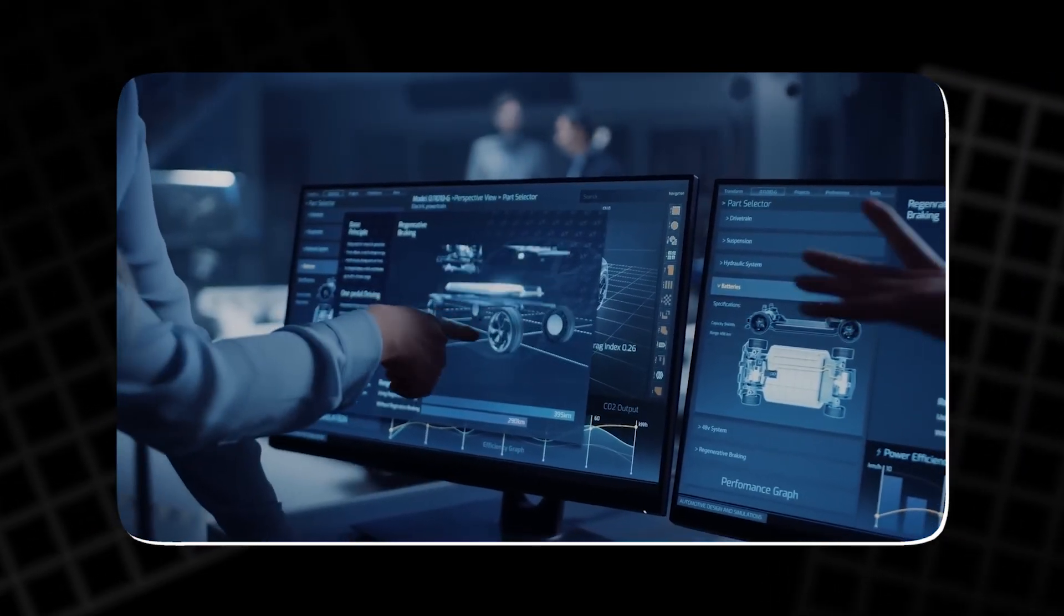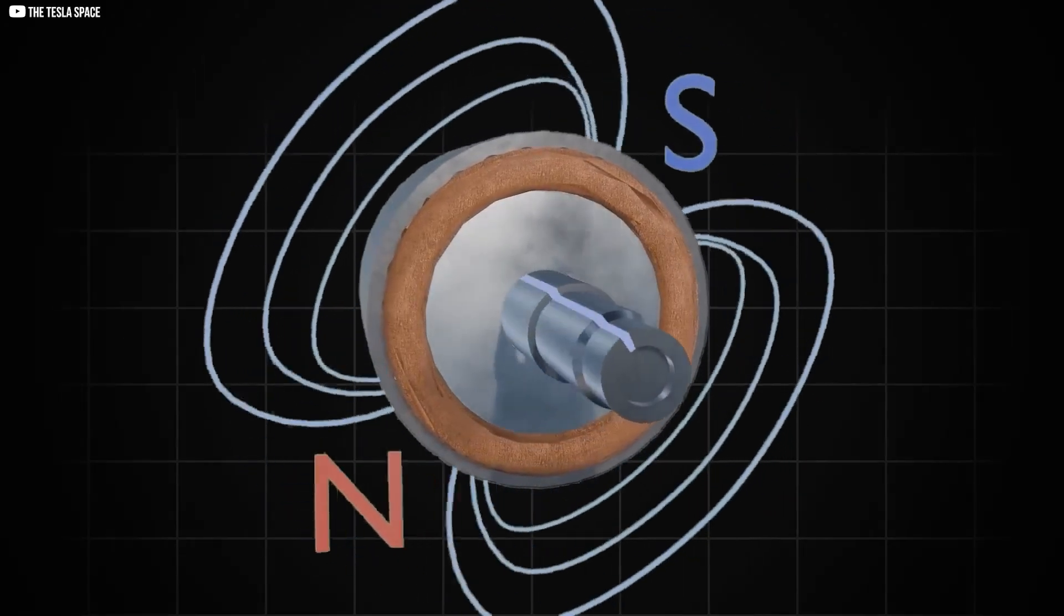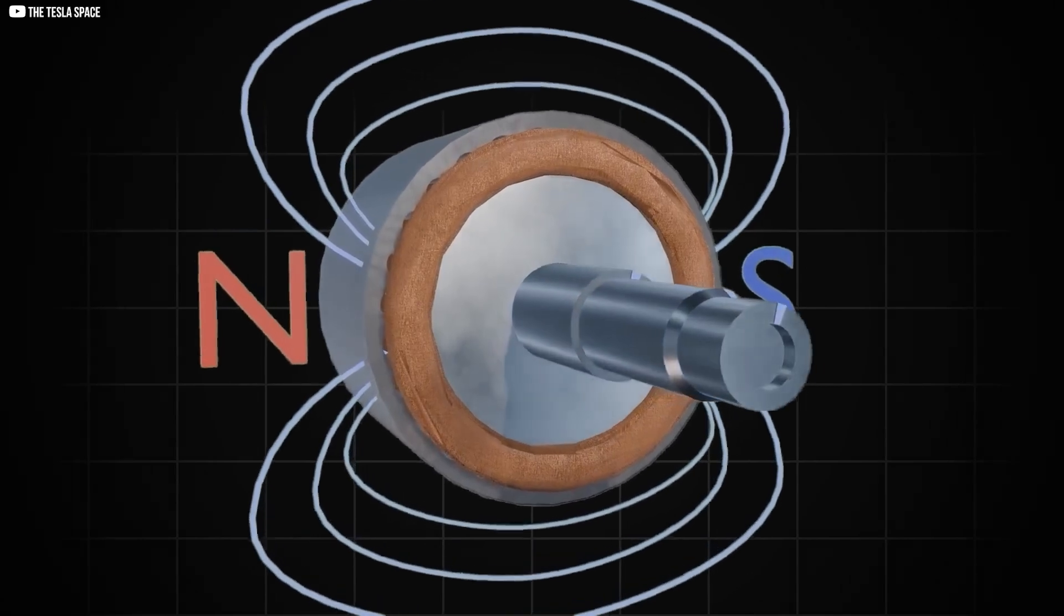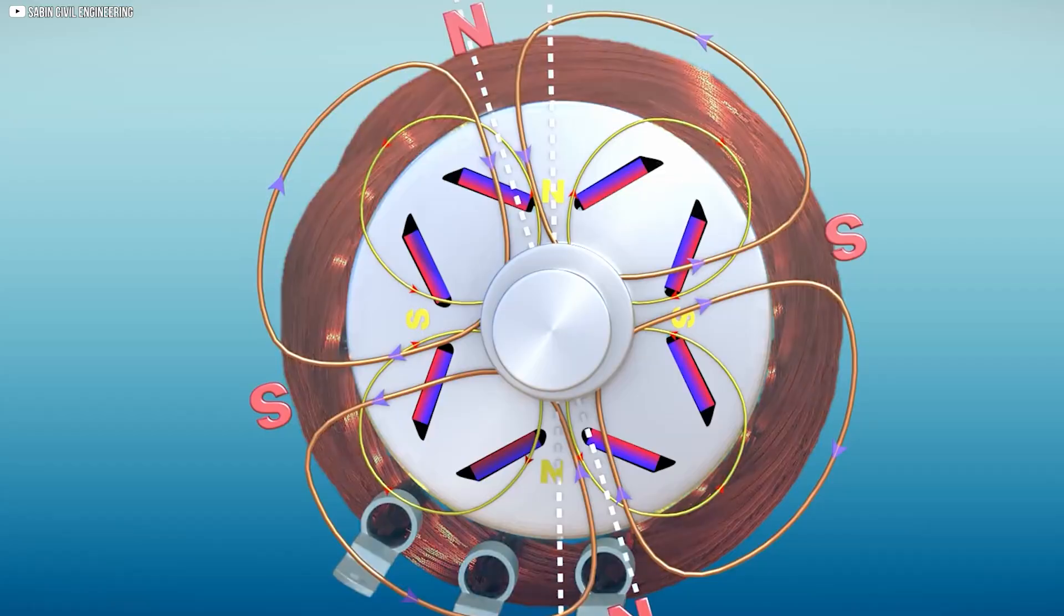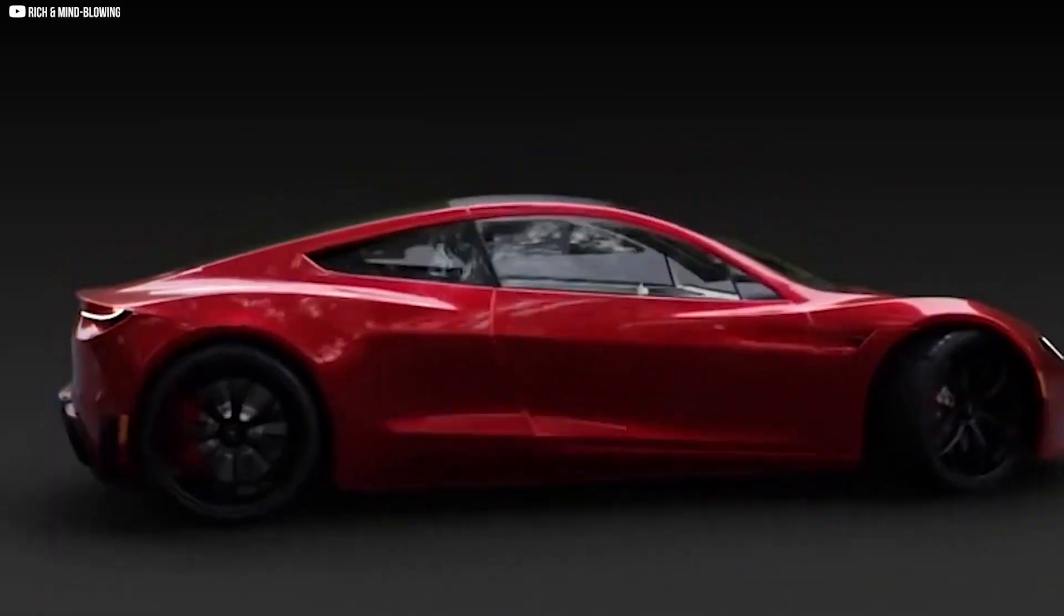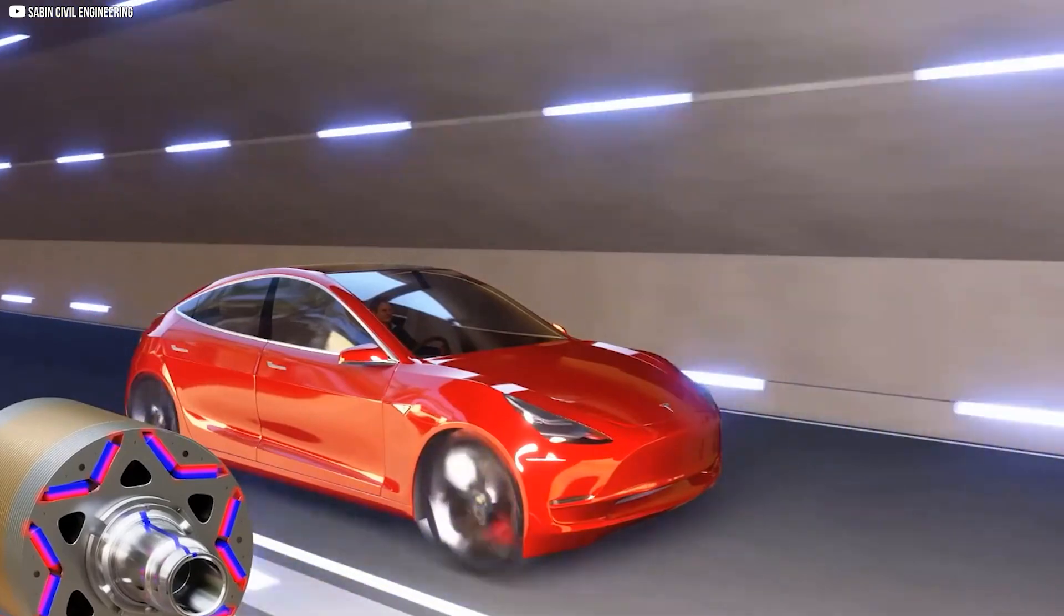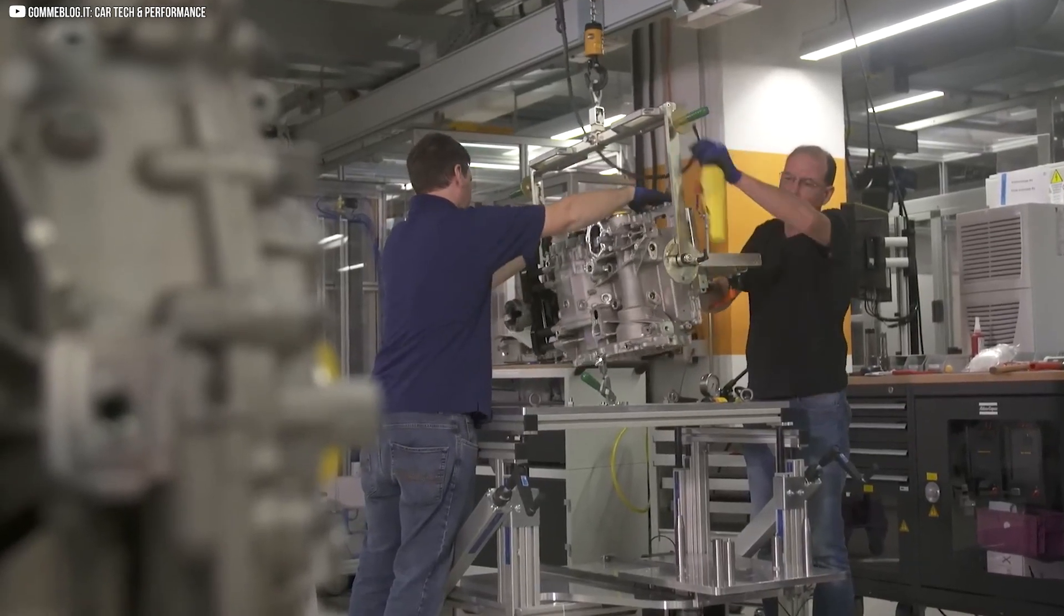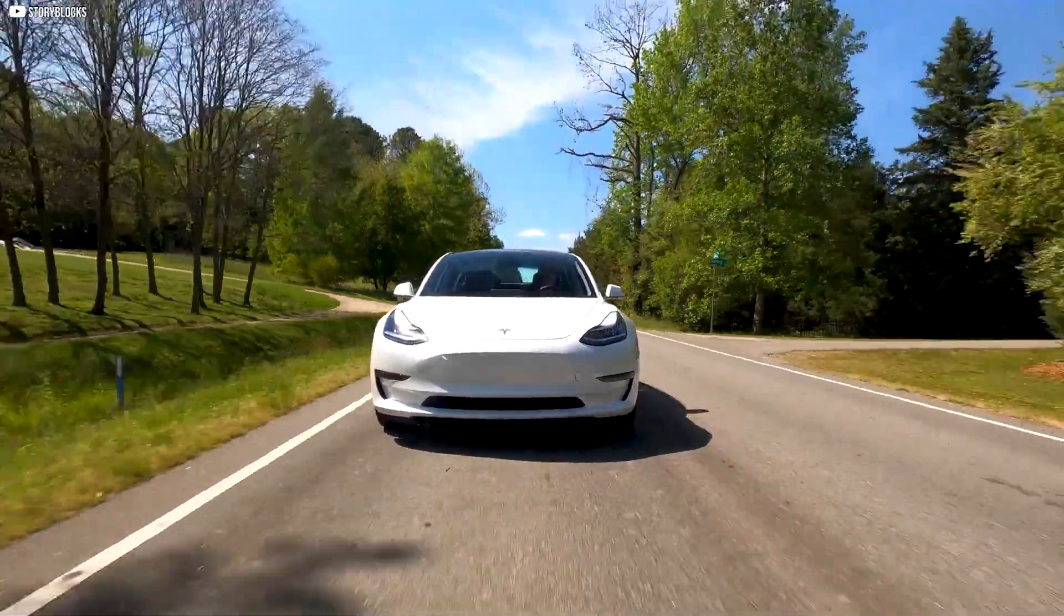Tesla's shift from induction motors to IPM-SYN-RM motors in the Model 3 marked a major leap in electric motor design. By combining permanent magnet and reluctance principles, Tesla created a motor with strong low-speed torque, excellent highway efficiency, and high reliability. This innovation not only boosted the Model 3's range and performance, but also lowered manufacturing costs, enhancing the competitiveness of electric vehicles against gasoline cars.